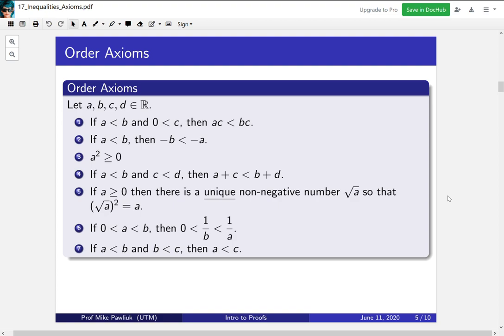Now we come to the bulk of what we want to do today. These are the order axioms. These axioms will hold for any four real numbers, a, b, c, and d. And I'll go through them quickly.